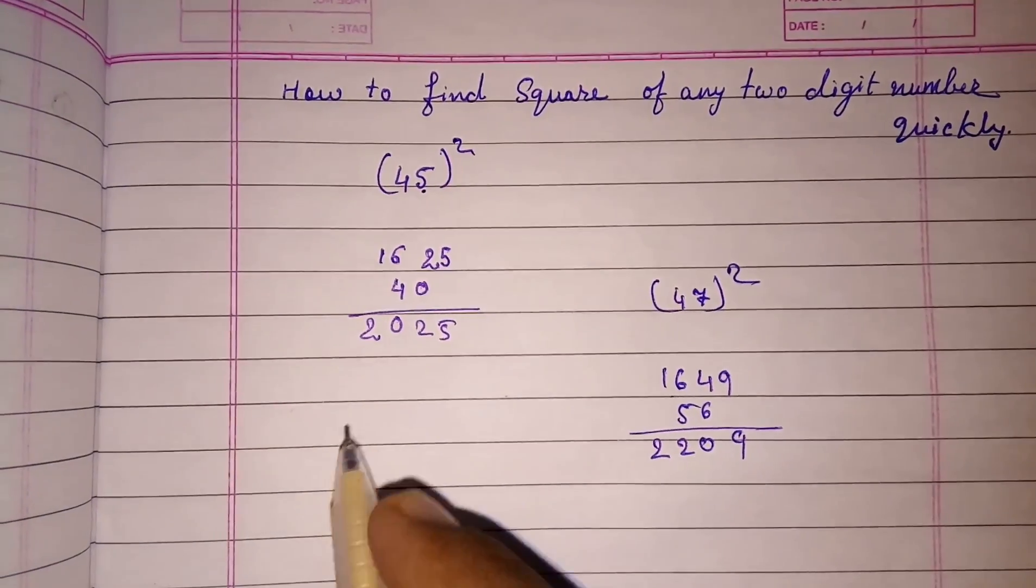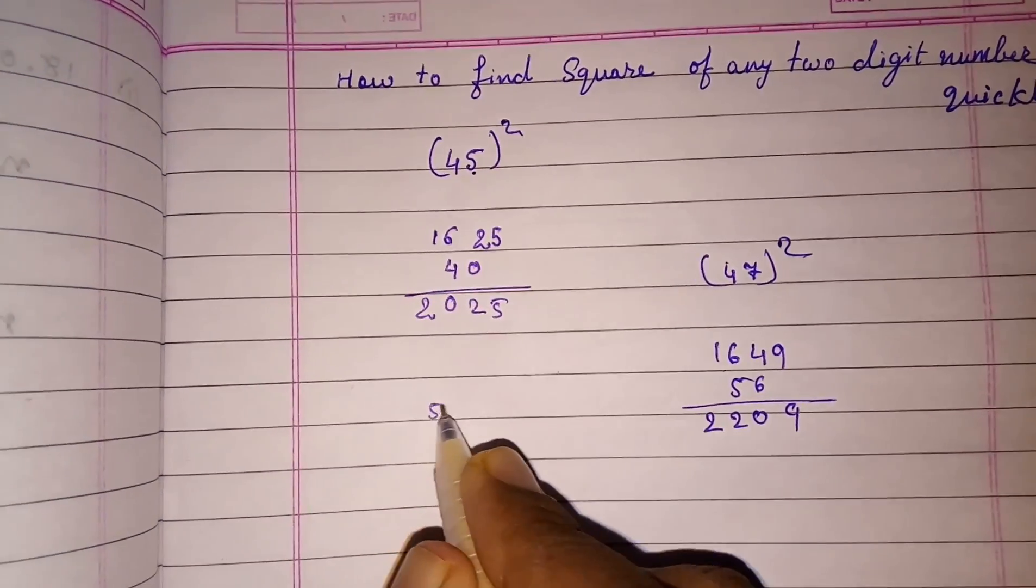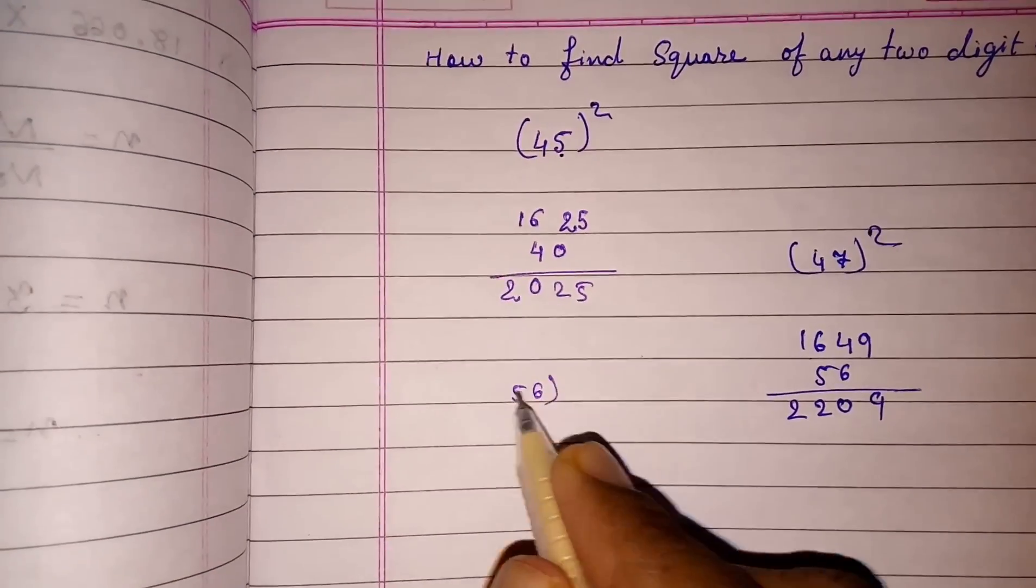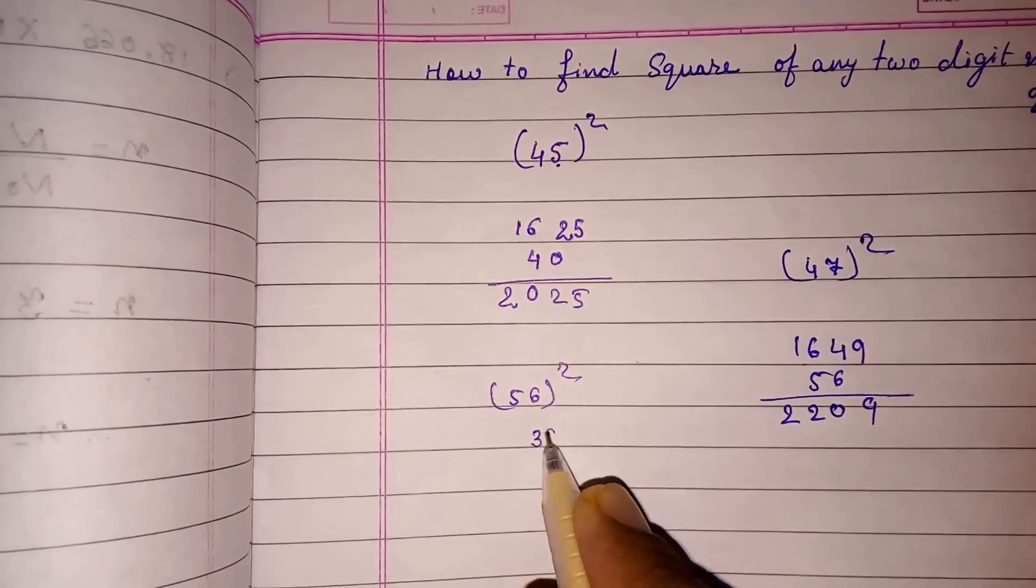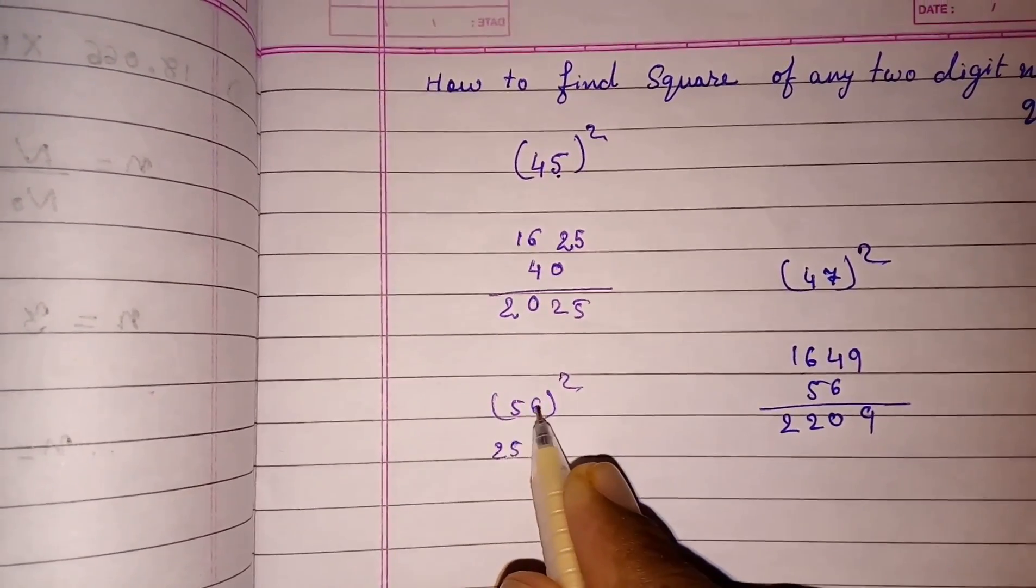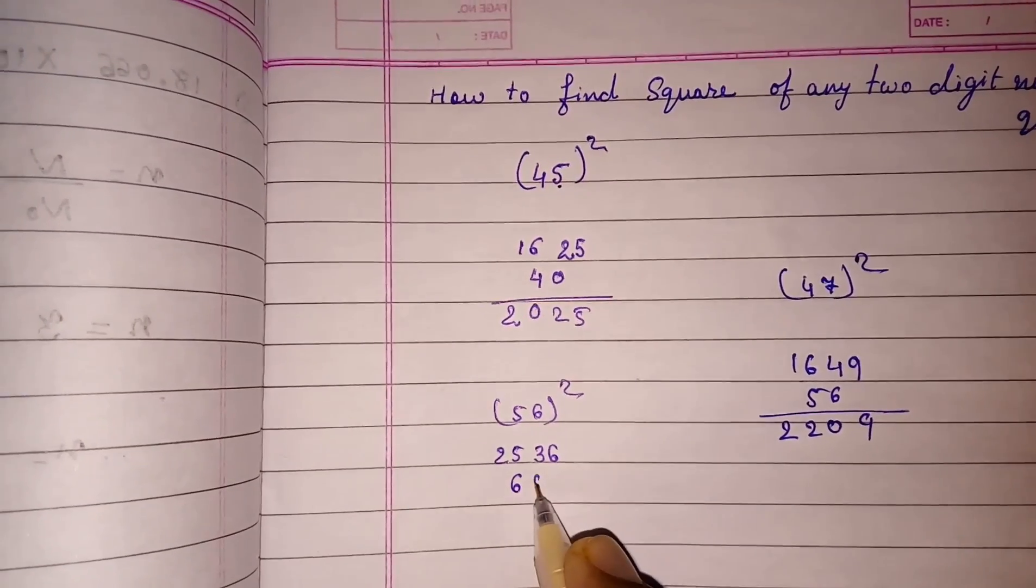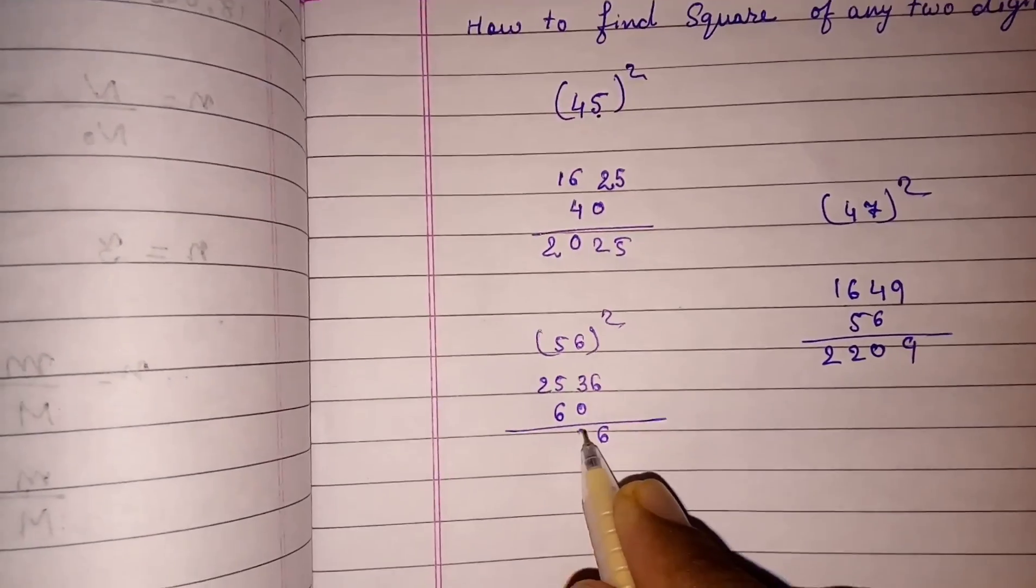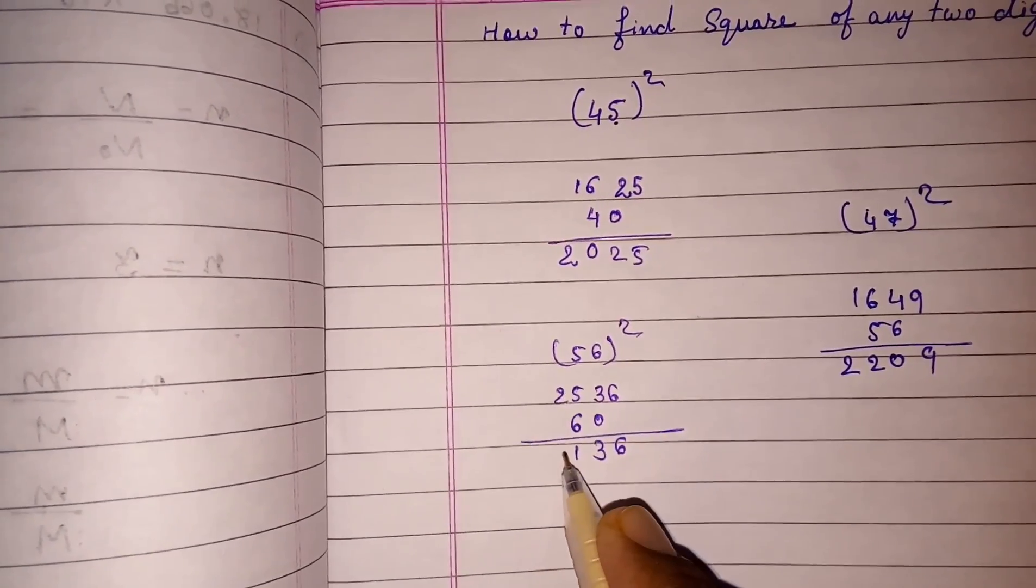Again I am going to give you one more example: 56 square. 6 square is 36, 5 square is 25. 6 times 5 is 30, 30 times 2 is 60. 6 plus 0 is 6, 3 plus 6 is 9, 1 carry, 2 plus 1 is 3.